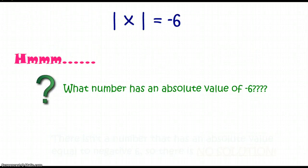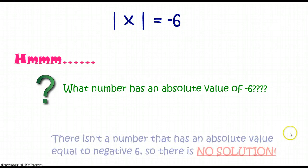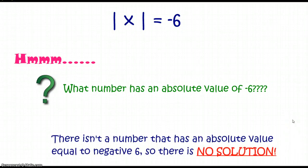How is this one different? This one asks: the absolute value of X is negative 6. What number has an absolute value of negative 6? The absolute value of 6 is 6, and the absolute value of negative 6 is also 6. There isn't a number that has an absolute value equal to negative 6, so there's no solution. When you have a negative number on that side, there are no solutions.